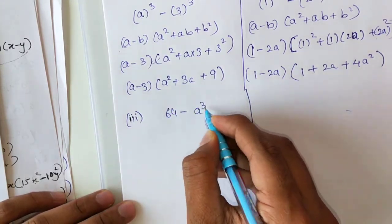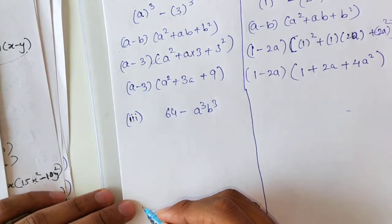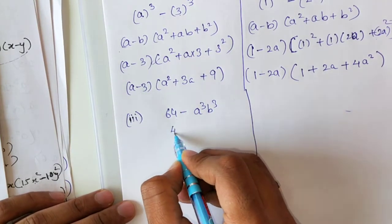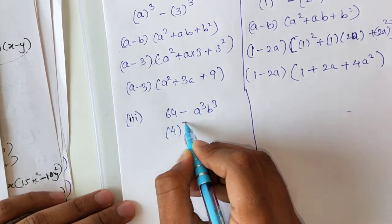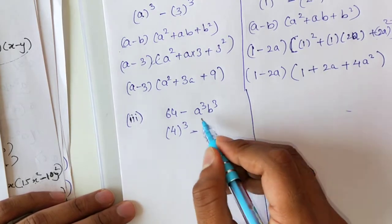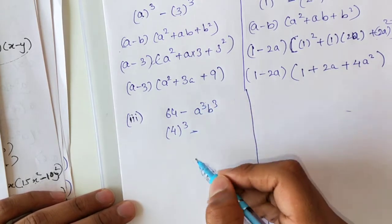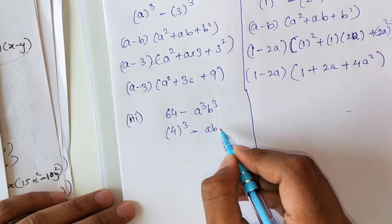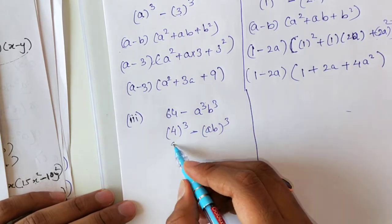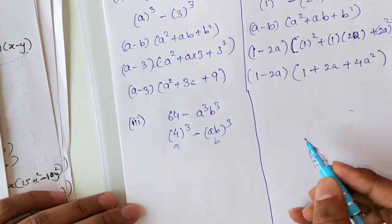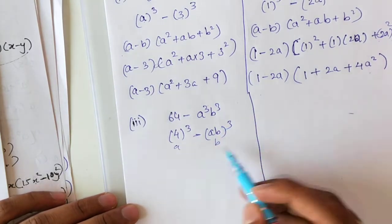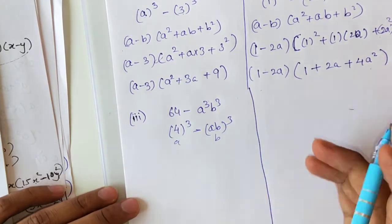The third sum: 64 - a³b³. Here 64 can be written as 4³, and a³b³ can be written as (ab)³. So this becomes (4)³ - (ab)³, which is in the form a³ - b³. Use this subtraction formula and you will get the answer.